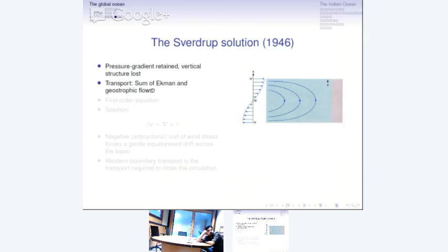So he is no longer going to be able to tell you what is happening at any given depth, unlike the classical Ekman spiral. What he can tell you is what happens to the transport integrated over some depth range. So he has lost the vertical detail, but he has been able to retain the pressure gradient. As it turns out, that is critical if you want to explain why the gyre exists.